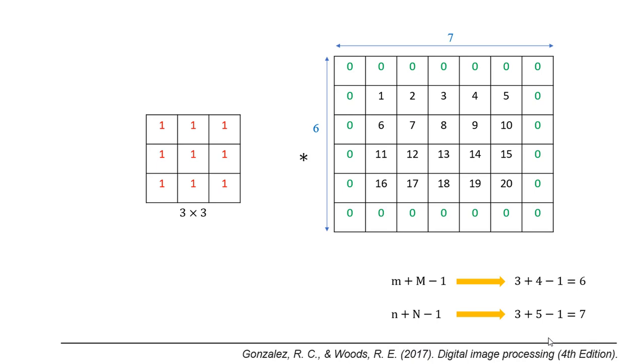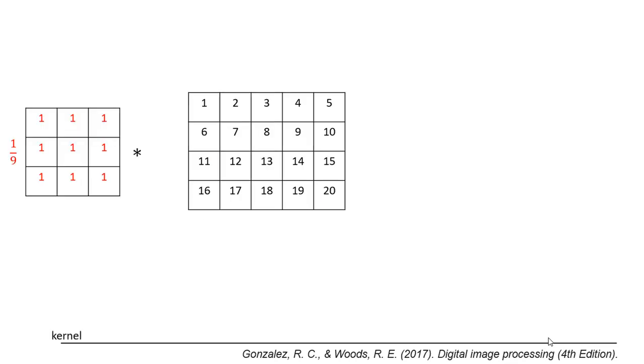Now let's put everything in an example. We have this image and we want to convolve it with this kernel.